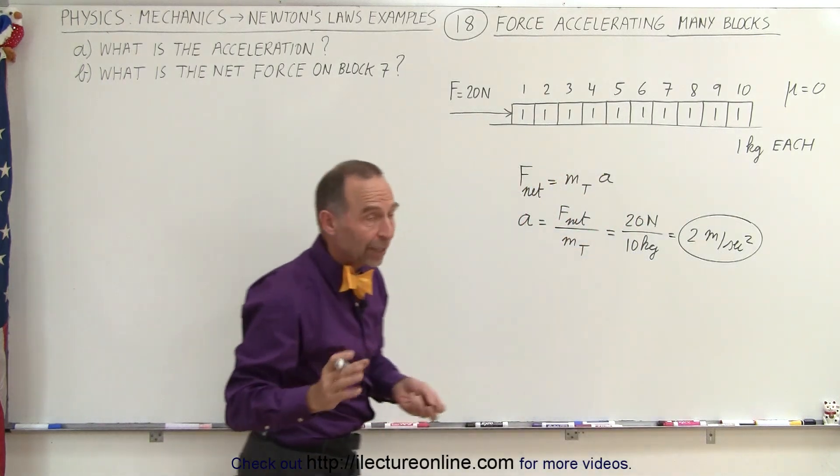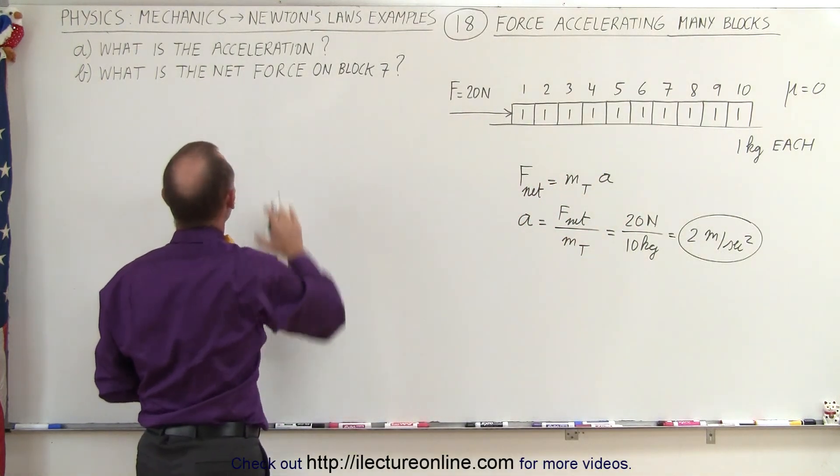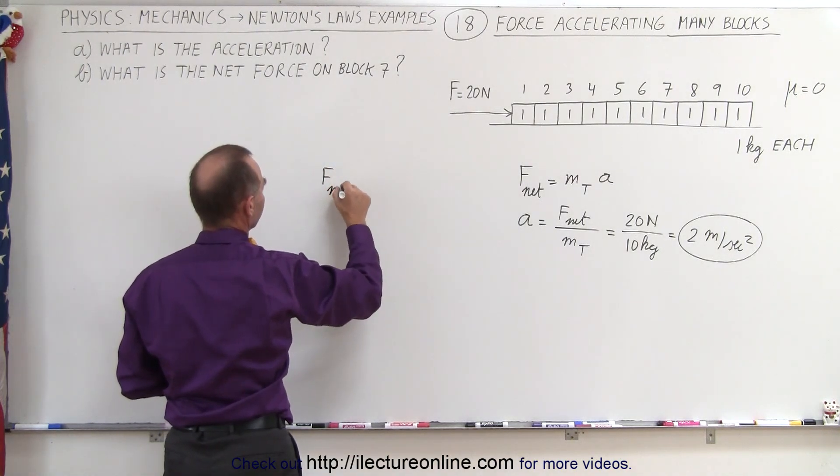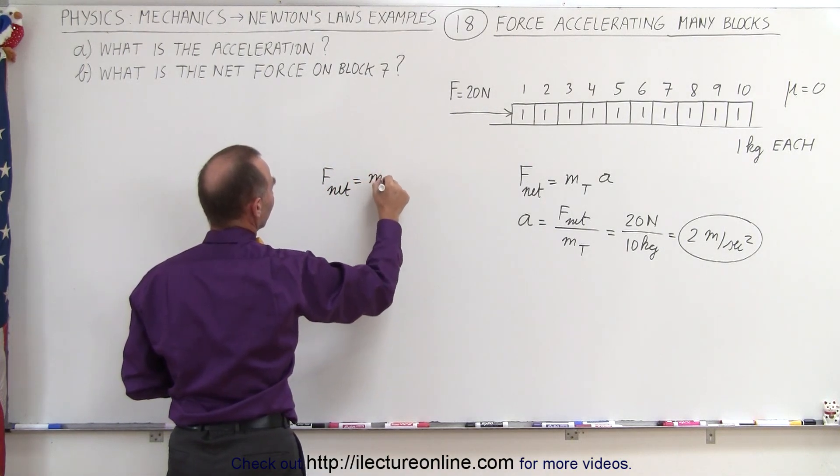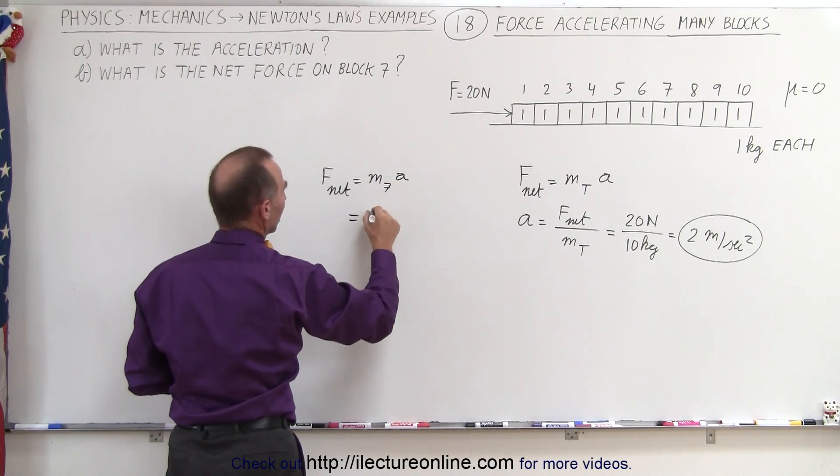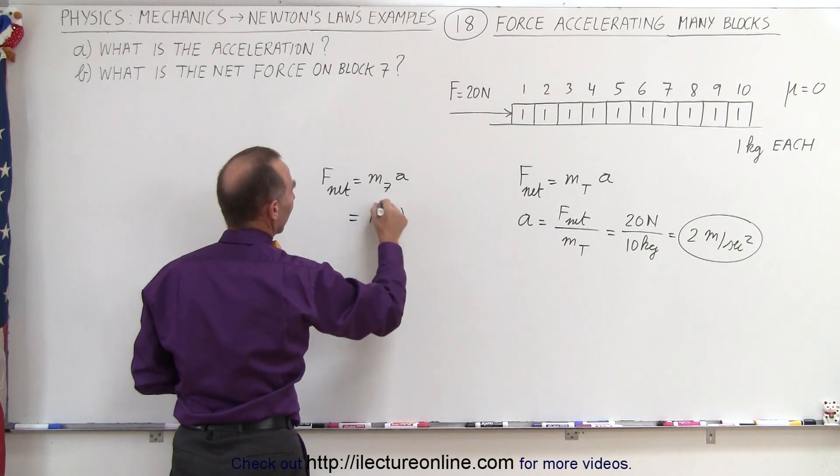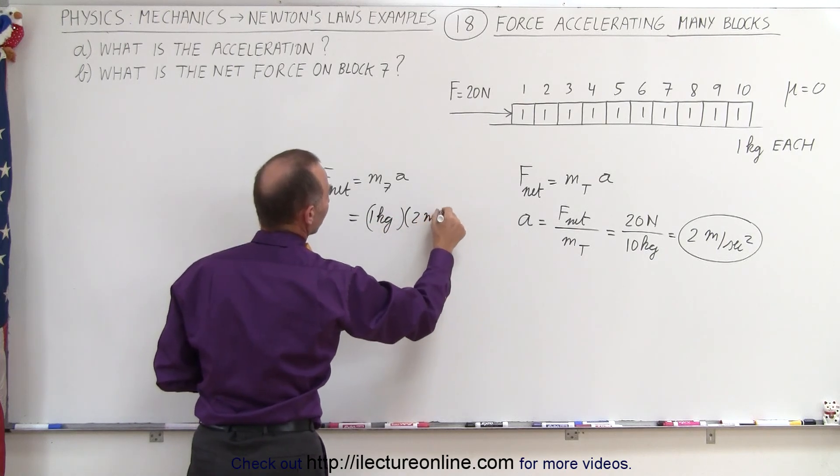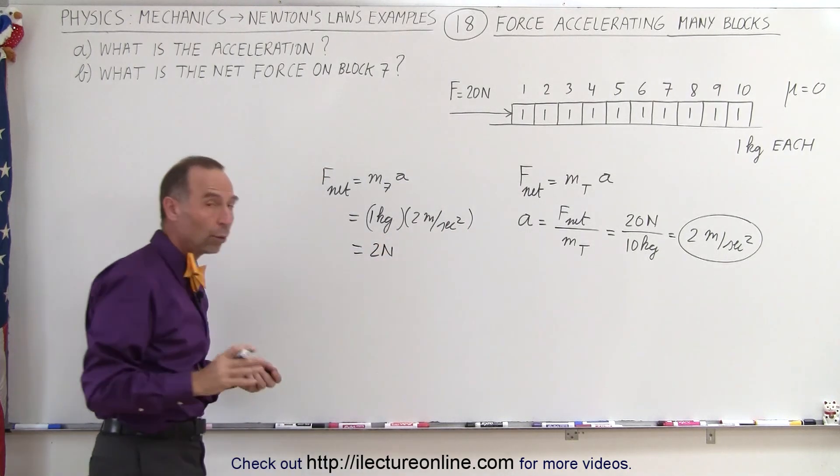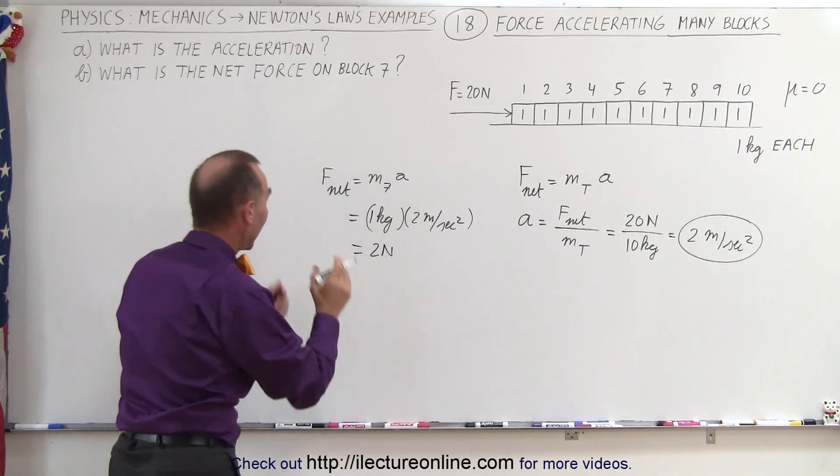So there's two ways now we can attack the second part of the problem. What is the net force on block 7? Again, we can use F net is equal to M7 times acceleration, or in this case, that would be 1 kilogram times acceleration of 2 meters per second squared, so that would be equal to 2 newtons.